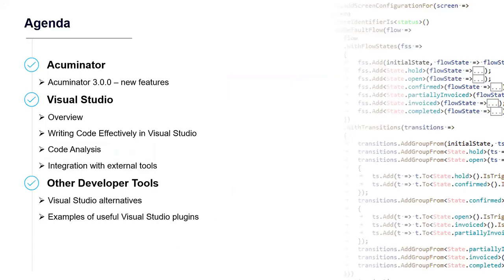Here is the agenda. We will start with Acuminator and cover the changes in the latest release. Then we will switch to Visual Studio — covering its different parts will take most of this session. We will discuss how you can write code efficiently, investigate code analysis settings, Visual Studio integration with other tools, and look at some Visual Studio alternatives. At the end I will list useful Visual Studio plugins. So let's begin with Acuminator.